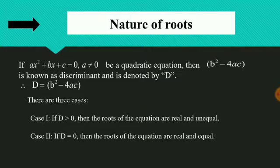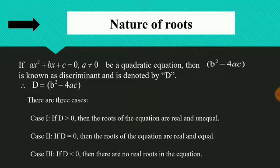Case 2: when D is equal to 0, then whatever is there in the under root sign vanishes, and we get a single value for the roots. We say that the roots are real and equal. The third case, where D is less than 0, means whatever is there in the under root sign is negative, which is not possible, and hence we say that no real roots exist for the equation.